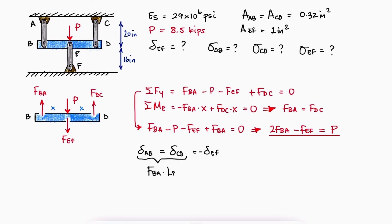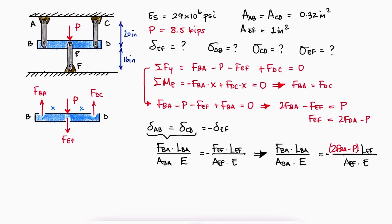Writing these deflections in terms of PL over AE, we can substitute FEF in terms of FBA and substitute the given dimensions for L and A to solve for FBA.